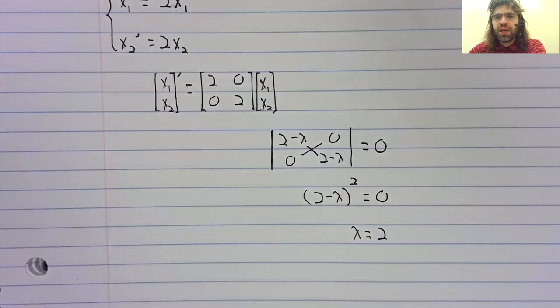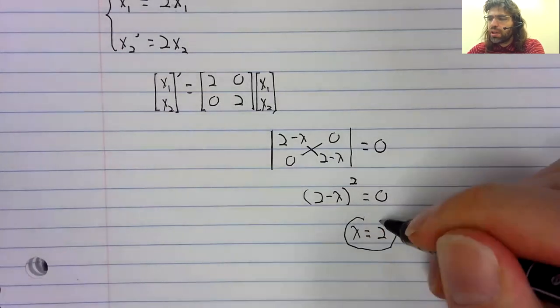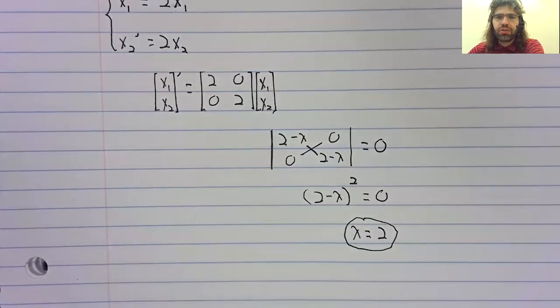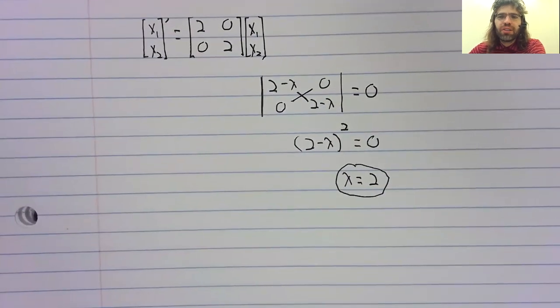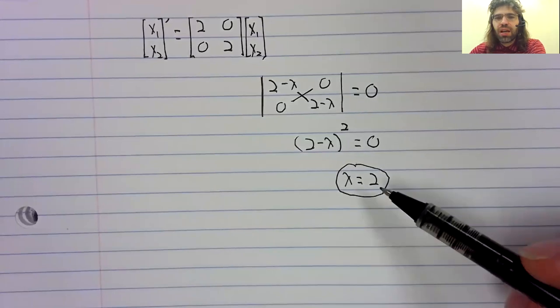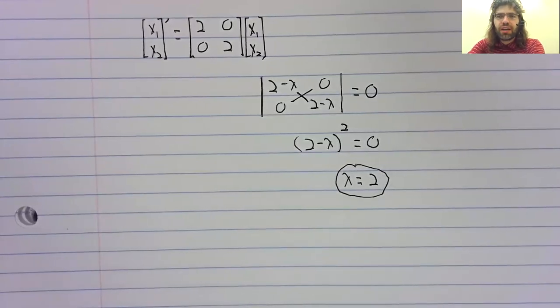So it's a two-by-two matrix, but it only has one eigenvalue. Rather than despair, let's forge ahead with the method that's worked before. Let's look at the eigenvectors of this eigenvalue.